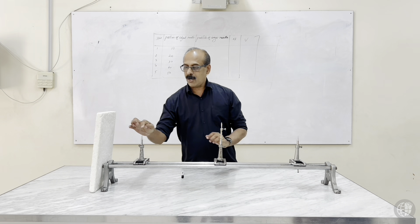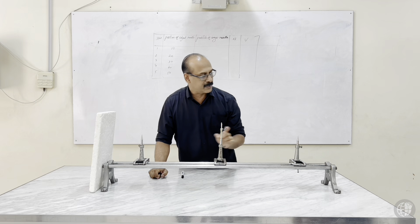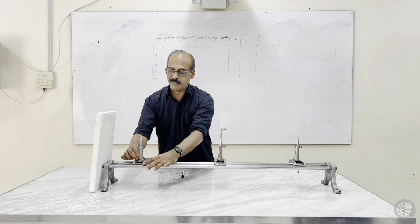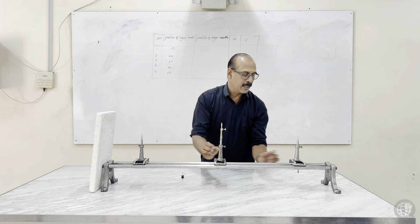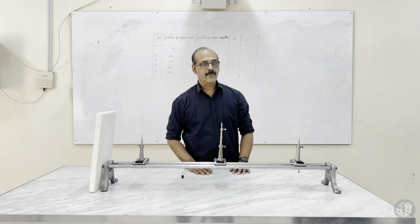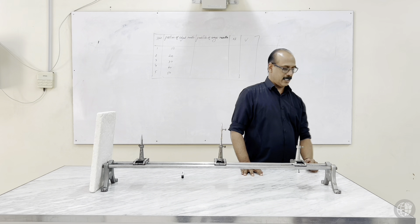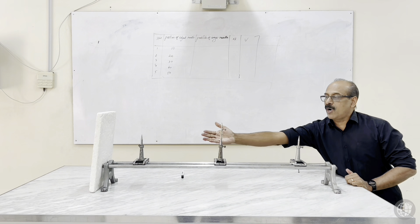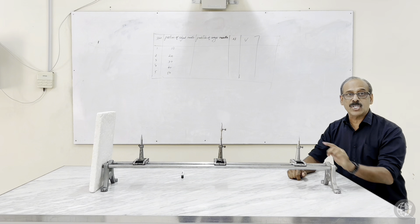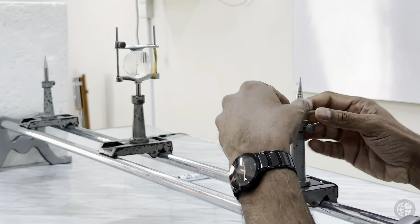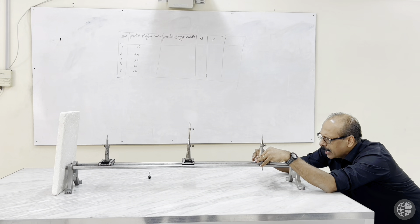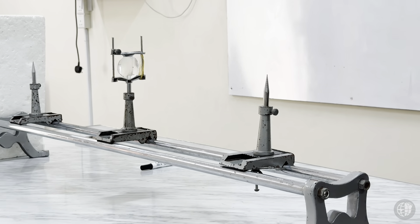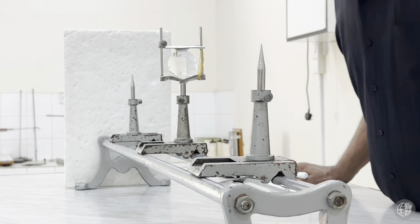Keep all centers — the object needle, lens center, and image-locating needle — in the same line, adjustable to and fro. Looking from behind the image needle, you can see the object forming an inverted image through the lens. When the object is far, the image is closer to the lens. Move the image-locating needle to coincide with the image.